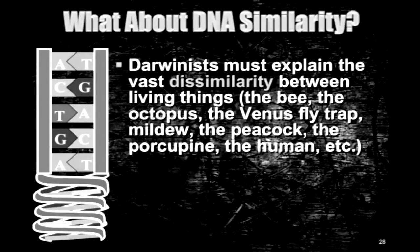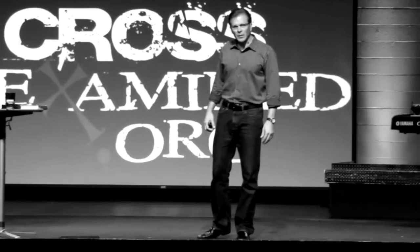Similarity is not the problem for Darwinists. It seems to me that Darwinists must explain the vast dissimilarity between living things. The bee, the octopus, the Venus flytrap, mildew, the peacock, the porcupine, and the human are all related according to Darwinists. How did we get this great diversity of life without intelligence? I think you have to have more faith, interpreting the evidence, to believe there's no intelligence behind all this. Did you know you're supposed to be related to the mildew on your shower floor — and to plants too? They never talk about plant evolution, but they think all life is the result of some natural process.